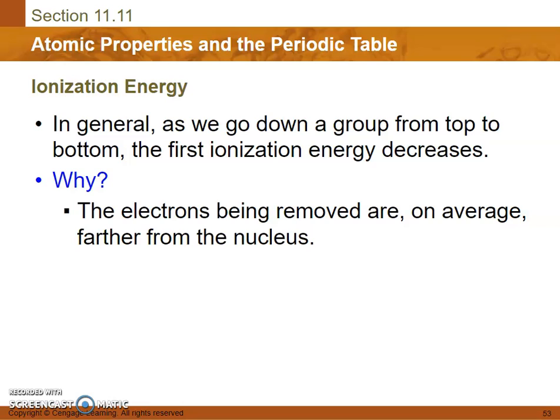In general, as we go down a group from top to bottom, the first ionization energy decreases. Why? Well, the electrons being removed are on average further from the nucleus, so the hold that the nucleus has on that electron isn't as good.